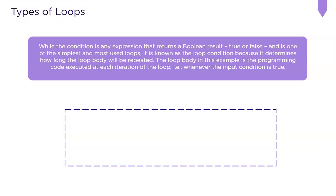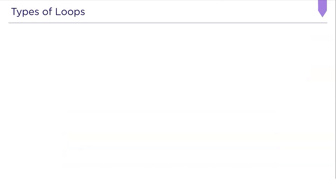First, we will look at the while loop. While the condition is any expression that returns a boolean result — true or false — it is known as the loop condition because it determines how long the loop body will be repeated. The loop body is the programming code executed at each iteration of the loop, that is whenever the input is true. Here is the syntax of a while loop: we have the keyword while, the condition, and the code body inside the brackets.